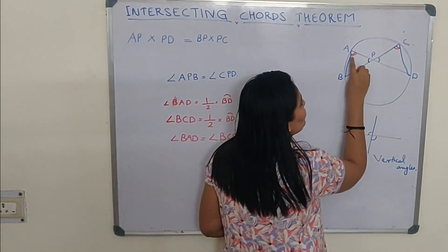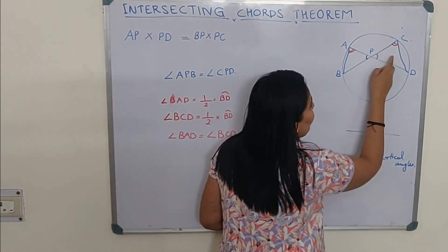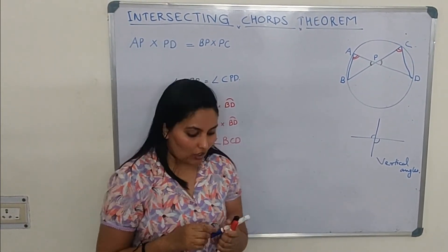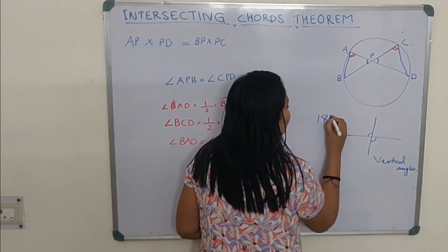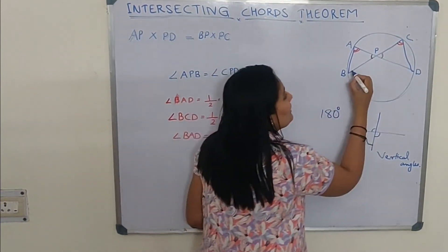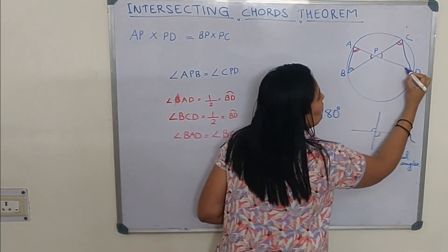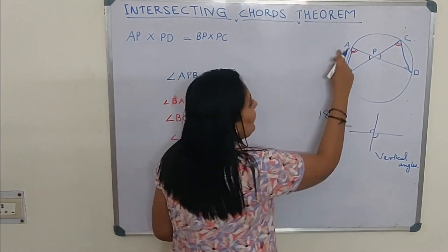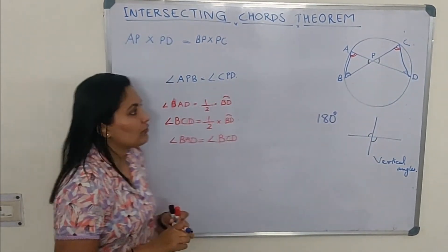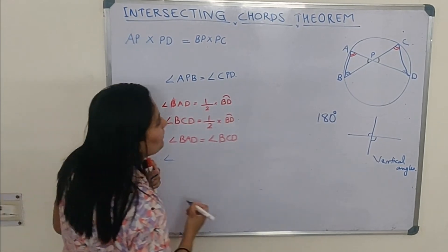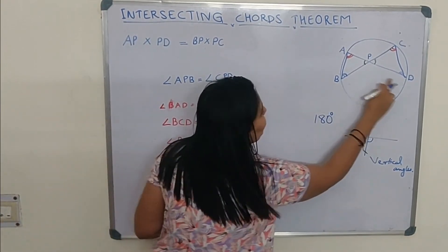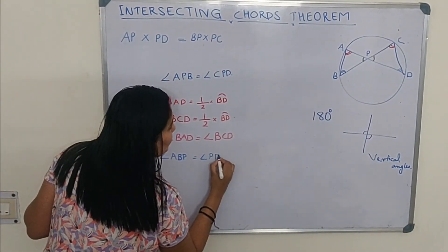We now have two angles of these triangles that are equal. Since the total angle sum of a triangle is always 180 degrees, if these two angles are equal, then we can say that the third angle is also equal. So we can say that angle ABP equals angle PDC.